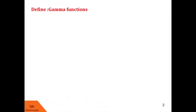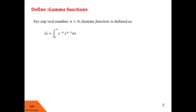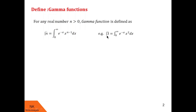For any real number n greater than 0, the gamma function is defined as the integral of e raised to minus x into x raised to n minus 1, dx over the limit 0 to infinity. This integral is denoted by the notation gamma of n, and is read as gamma of n. Note that in the integrand on the RHS, the power of x is 1 less than the number in the gamma notation. For example, gamma of 3 can be written as the integral from 0 to infinity of e raised to minus x into x squared dx.